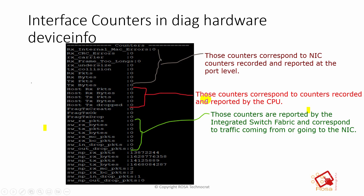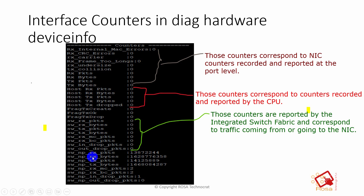Host RX counters represent packets being dropped at the CPU level. After the NIC, traffic goes to the CPU — if the CPU is dropping packets, these counters increase. If host RX packets are increasing, the issue involves the CPU. Switch TX and switch RX counters represent drops at the integrated switch fabric (ISF). In the FortiGate architecture, traffic flows from NIC → ISF → host or NP. The NP counters (switch NP) represent drops at the NP level.